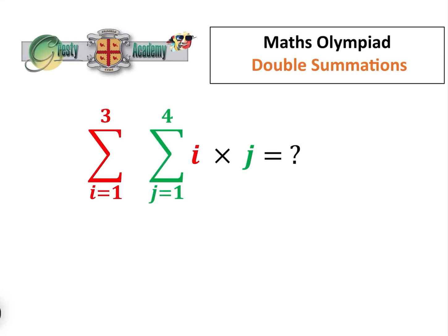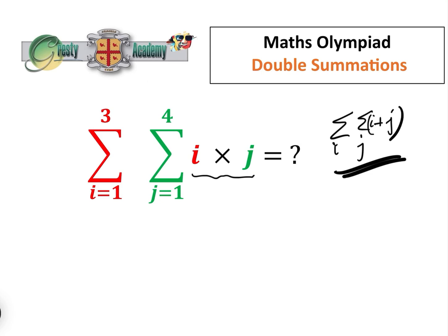In the previous video we did a double summation of the form sum_i sum_j of i plus j. If you haven't seen that video, feel free to go and watch it. In this video we're going to advance on this a little bit and do double summations where it's i times j. First of all, let's try and solve the sum from i equals 1 to 3, j equals 1 to 4, of i times j.